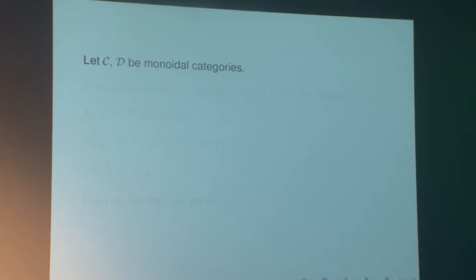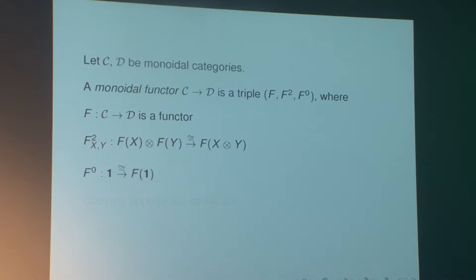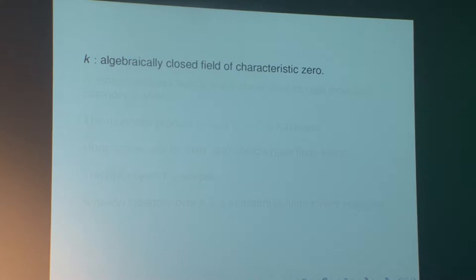The kind of transformations one is interested in between monoidal categories are exactly those that transform the tensor product of one into the tensor product of the other. So we have a functor together with a natural isomorphism between the tensor product of the images of objects and the image of the tensor product, and the unit object and its image, with structure obeying appropriate conditions meaning that F commutes with the associativity and unit constraints of the category.